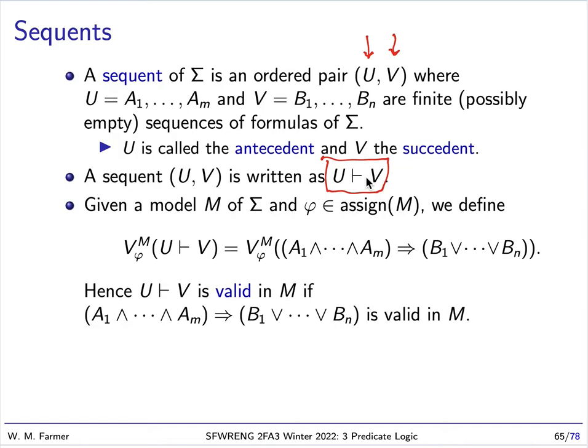So basically the idea is we can prove V from U. Now, the meaning of a sequent can be given as follows. We can define the value of a sequent in a model with a variable assignment as the value of this expression. This is the expression we get by taking the conjunction of all the members of U and taking the disjunction of all the members of V, and the formula says that the conjunction implies the disjunction.